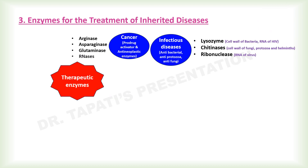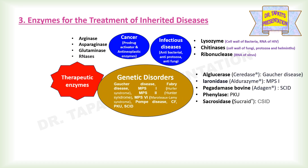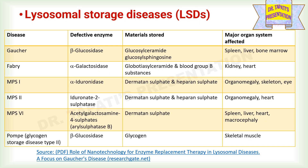Enzymes are used for the treatment of various inherited diseases or genetic disorders including Gaucher disease, Fabry disease, MPS1, MPS2, MPS6, Pompe disease, cystic fibrosis, phenylketonuria, and severe combined immunodeficiency. Lysosomal storage diseases (LSDs) comprise a group of rare inherited chronic syndromes that cause deficiency of specific native enzymes within the lysosomes. These are inborn errors of metabolism characterized by the accumulation of substrates in excess in various organs, causing dysfunction and contributing to great morbidity and mortality.